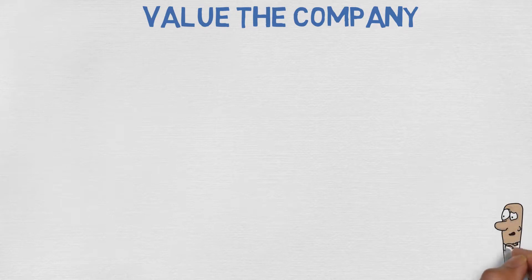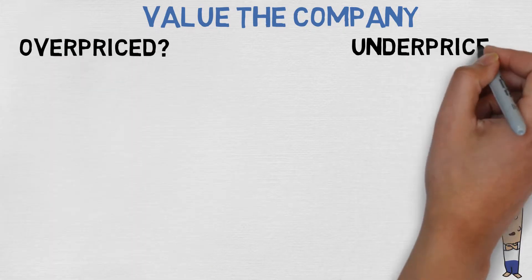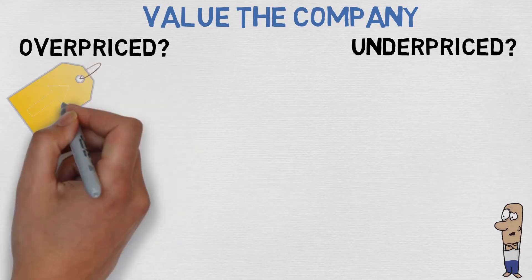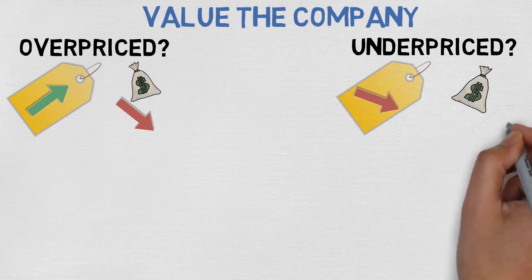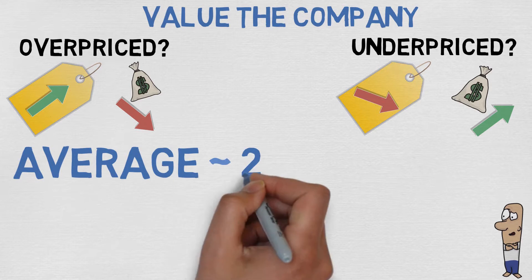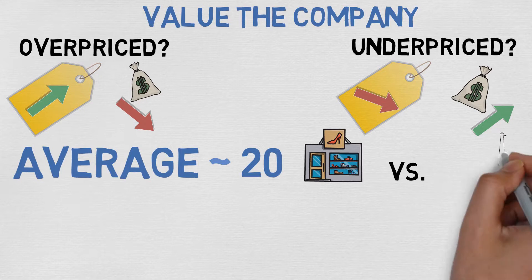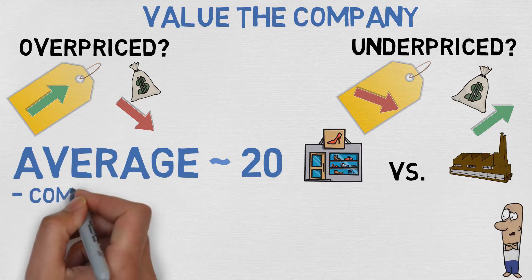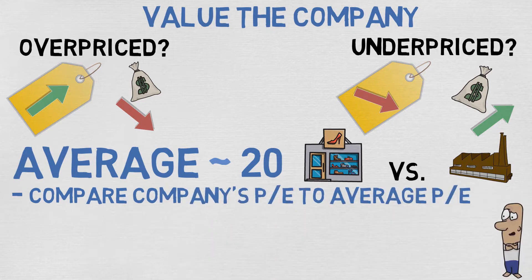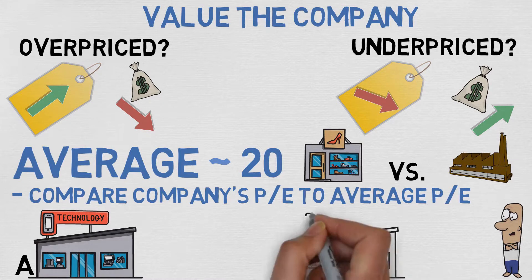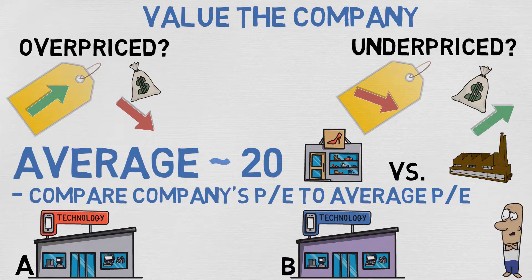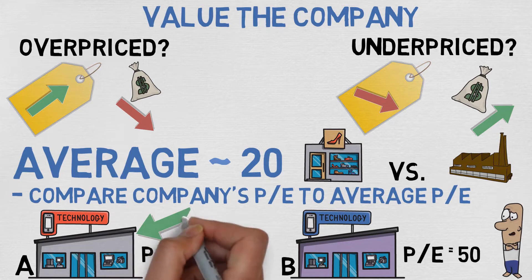Thirdly, you can use the price to earnings ratio to value the company — it is one of the most used ratios for valuation. It is mainly used to determine whether a stock is overpriced or underpriced. If the PE ratio is high, the price is high compared to earnings, so the stock could be overvalued. If the ratio is low, the stock could be undervalued. The average PE ratio is usually somewhere around 20, but this depends on many factors — for example, different industries have different averages. So one way to check is to find the average PE ratio for an industry and compare it to a specific company. You can also compare different companies in the same industry: if company A has a PE of 10 and company B has a PE of 50, company A would be a better investment according to the PE ratio.